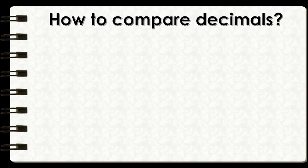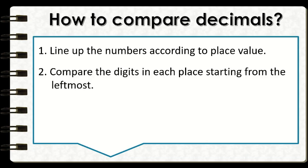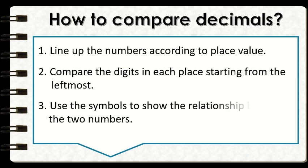How are we going to compare decimals? To compare decimals, there are some simple steps that we need to consider. First, line up the numbers according to the place value. Second, compare the digits in each place starting from the leftmost. And third, use the symbols to show the relationship between the two numbers.